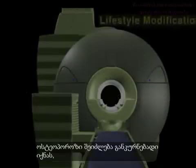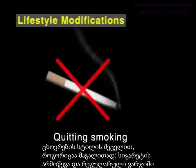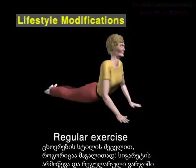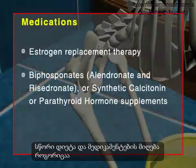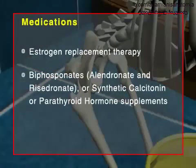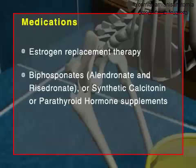Osteoporosis can be treated by changes in lifestyle, like quitting smoking, regular exercise, and a balanced diet, and by taking medications such as estrogen replacement therapy, bisphosphonates, alendronate, and risedronate, or synthetic calcitonin or parathyroid hormone supplements.